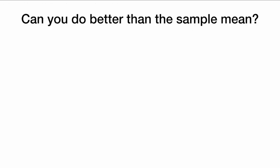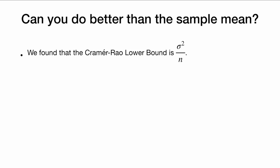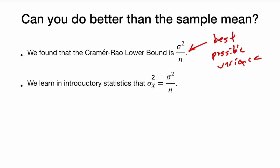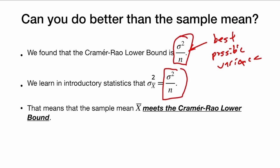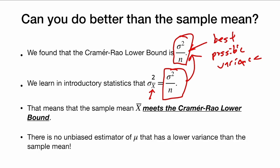So our question is: can we do better than the sample mean? We proved that the Cramér-Rao lower bound is sigma squared over n — this is the best possible variance of any unbiased estimator of mu. From introductory statistics, we know the variance of x-bar is also sigma squared over n. Because these two numbers are the same, x-bar meets the Cramér-Rao lower bound — it is the best possible estimator with the lowest possible variance. We can stop searching for something better than the sample mean, because there is no unbiased estimator of mu with lower variance.